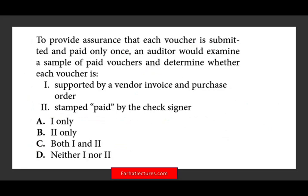To provide assurance that each voucher is submitted and paid only once, an auditor would examine a sample of paid vouchers and determine whether each voucher meets certain criteria. Option one — supported by a vendor invoice and a purchase order — is good practice, but that's for authorization purposes, not for ensuring payment is made only once. So option one doesn't serve our purpose, meaning A and C are out. We're left with B and D, so we need to determine if option two is correct.